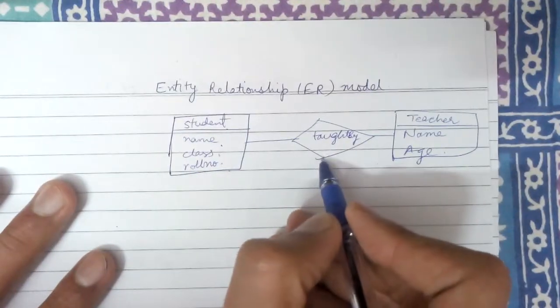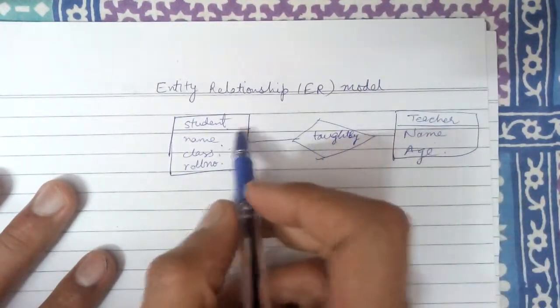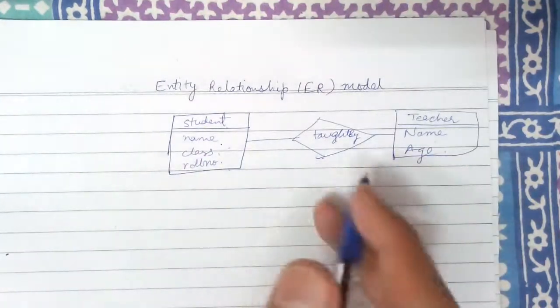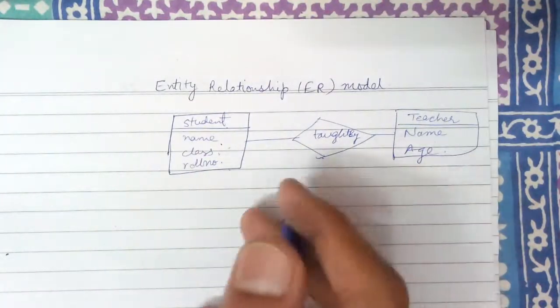And what is the relation between them? Student is taught by a teacher. So taught by relation basically relates those two entities.